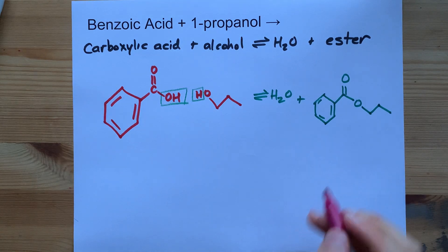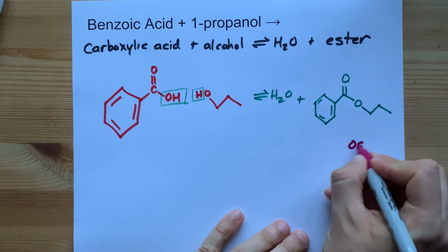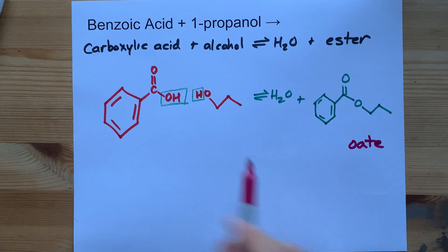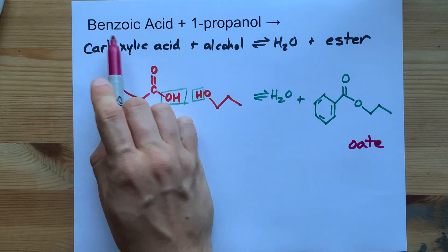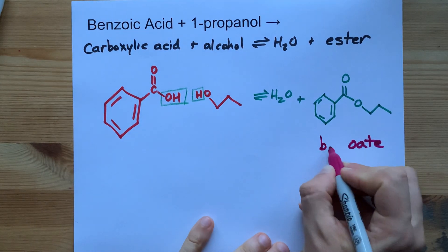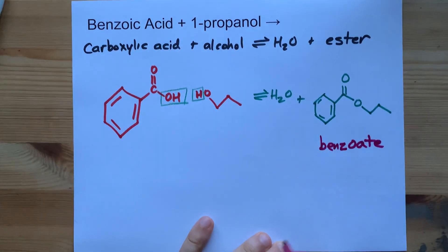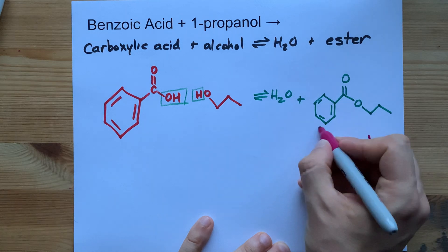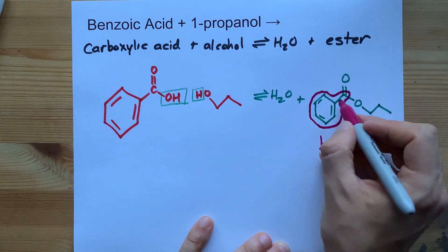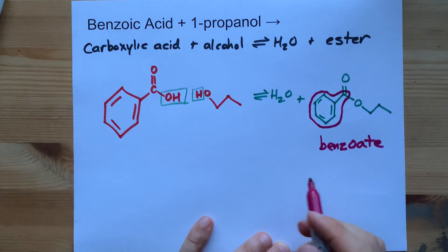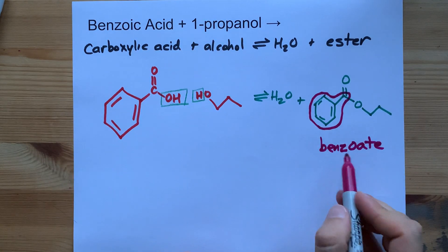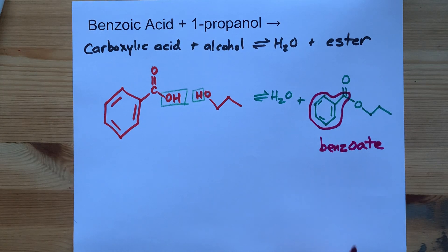To name it, esters always end with -oate and the root comes from the acid. Benzoic acid gives you benzoate. The -oate is inspired by whatever is connected to the double-bonded O — here it's that benzene ring with the extra carbon, which by definition is benz.